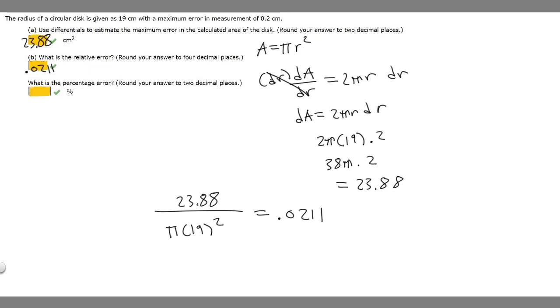Part C asks, what is the percentage error? The percentage error is just multiplying by 100, so 0.0211 times 100. You should get 2.1053. We need to round to two decimal places, so this rounds up to 2.11. The percentage error is 2.11%. That's how you solve this problem.